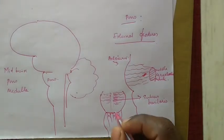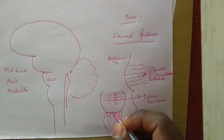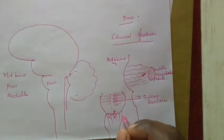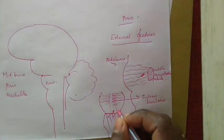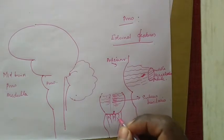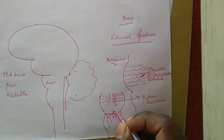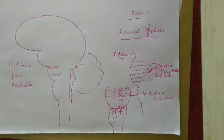Just at the junction between the pons and the medulla, at the level of the pyramid, from the groove we have the origin of the abducens nerve. Just over the olive, between the pons and the medulla at the level of the olive, we can see the emergence of two cranial nerves — that is the facial and vestibulocochlear nerve. That's about the anterior aspect.